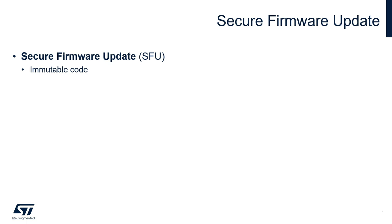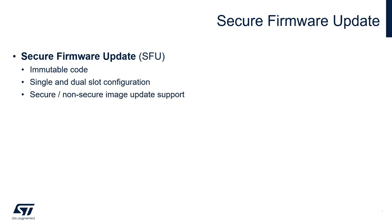The second service offered by the TFM package is the secure firmware update, an immutable code in charge of detecting that a new firmware image is available, and of checking its authenticity and integrity before installing and executing it. Examples are provided for single and dual slot configurations. In single slot, the current firmware is replaced by the new one, allowing you to maximize the firmware image size, but removing any possibility for a rollback to the previous firmware image in case of issues during the update. The dual slot configuration requires a bigger amount of flash, but it enables a safe image installation, and it is commonly used for over-the-air firmware update for IoT devices. The firmware update can download either a single binary, including both the secure and non-secure parts of the firmware image, or two different binaries, secure and non-secure independently.